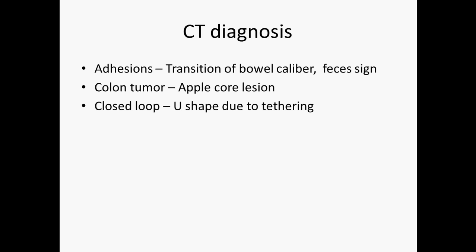On CT there's something called an apple core lesion — you can also see these with a barium swallow, though you probably don't want to do barium swallows if you suspect a complete bowel obstruction. This shows a narrowed spot constricted by a tumor surrounding the bowel. There's also a closed loop or U-shape sign visible on CT, due to tethering from an adhesion or something pulling the bowel to the side.